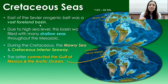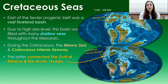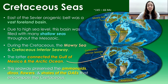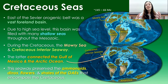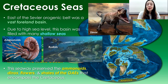East of the Sevier Orogeny was the vast foreland basin, which due to high sea level was filled with many shallow seas throughout the Mesozoic. During the Cretaceous specifically, the Mowry Sea shown in the upper image was nearly connecting the Arctic Ocean to the Gulf of Mexico. Further into the Cretaceous it became fully connected — and that is called the Cretaceous Interior Seaway.